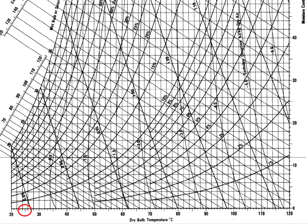On a psychrometric chart, first we identify the conditions for ambient air: dry bulb temperature of 25°C and relative humidity of 50%. We see where the 50% relative humidity curve intersects with the 25°C dry bulb temperature — that is point A. As air moves through a heater it will be represented by a horizontal line on the psychrometric chart, so we have from A to B.